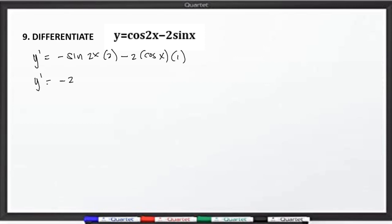y prime is equal to negative 2 sine of 2x minus 2 cosine of x. This will be equal to y prime is equal to, factor out negative 2, we will have sine of 2x plus cosine of x. This will be our final answer, or if you want, you can expand this one by this identity. May identity po kasi tayong ganito, double angle formula. But we are just asked to find the derivative, so this will be fair enough. Negative 2 times the quantity, sine 2x plus cosine of x.